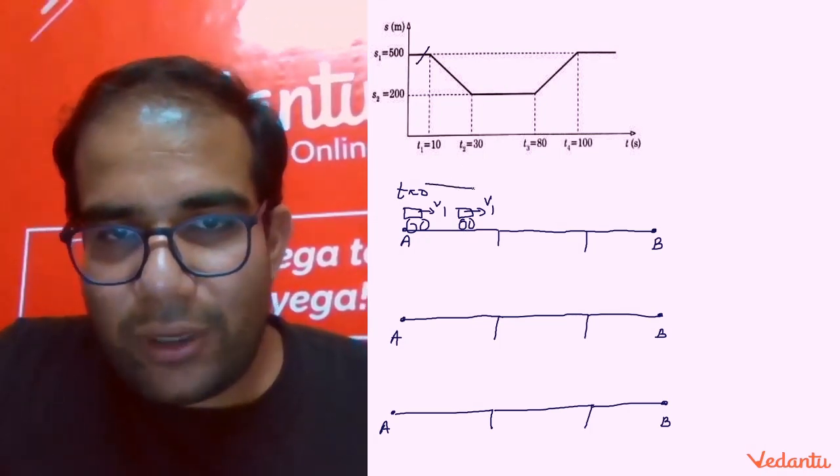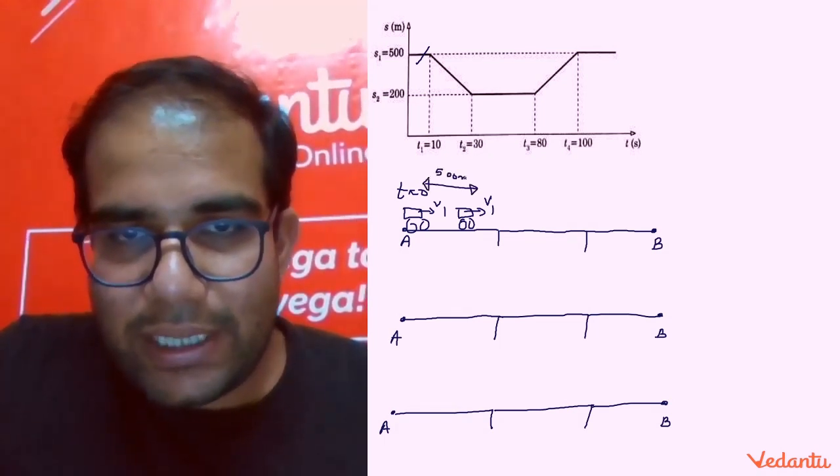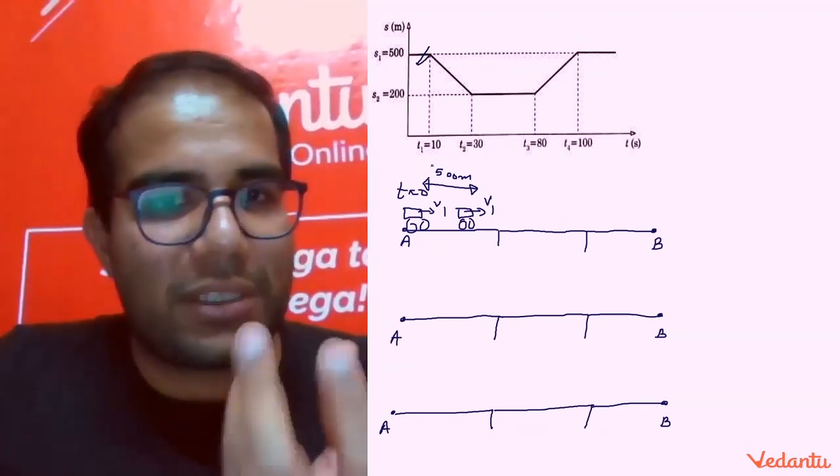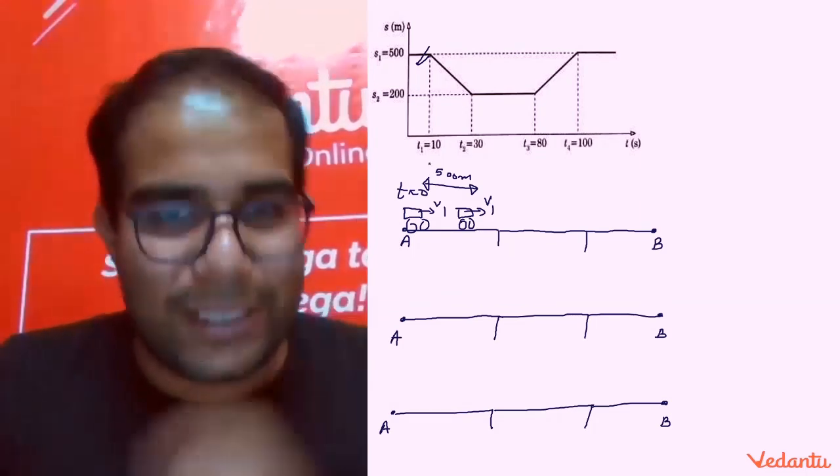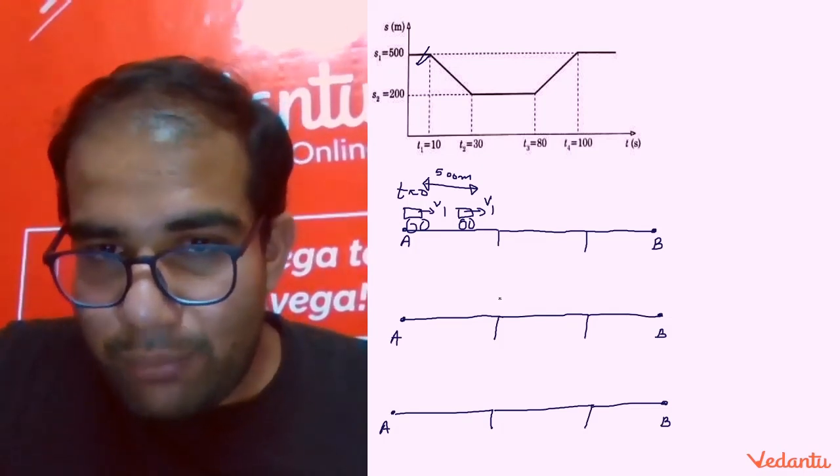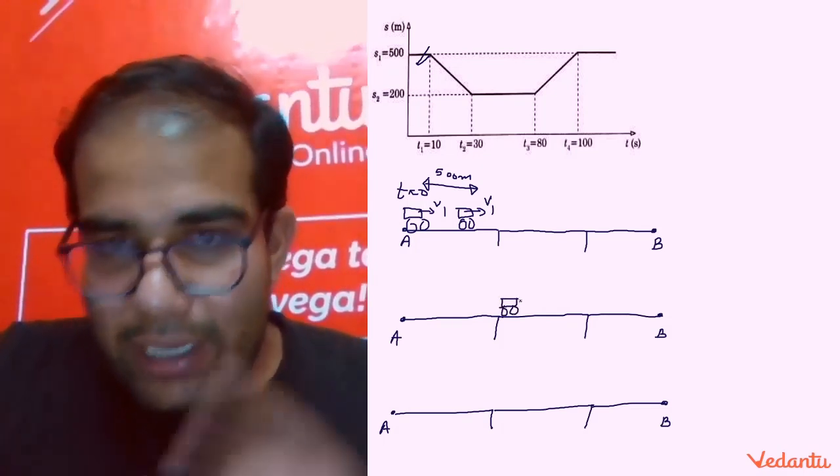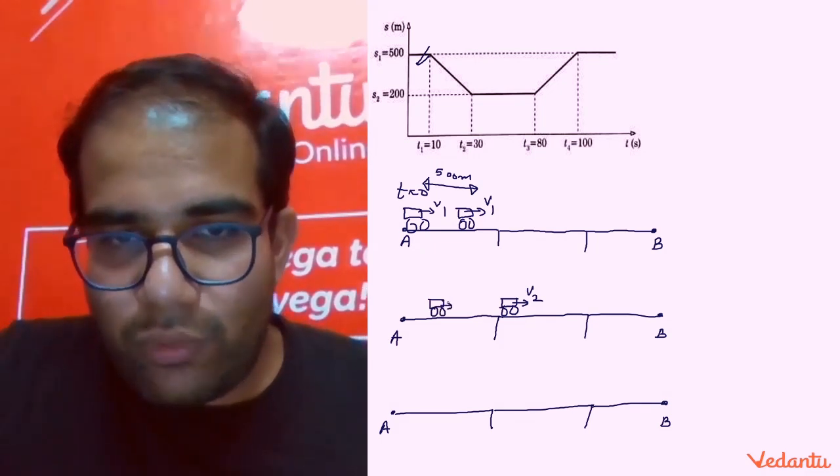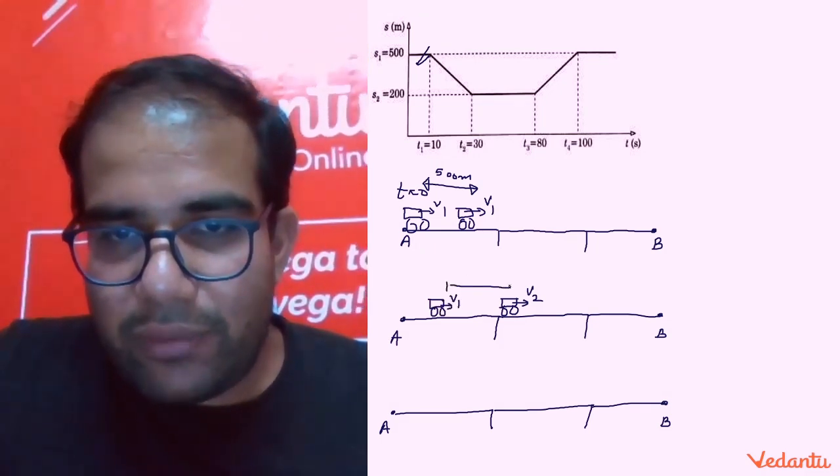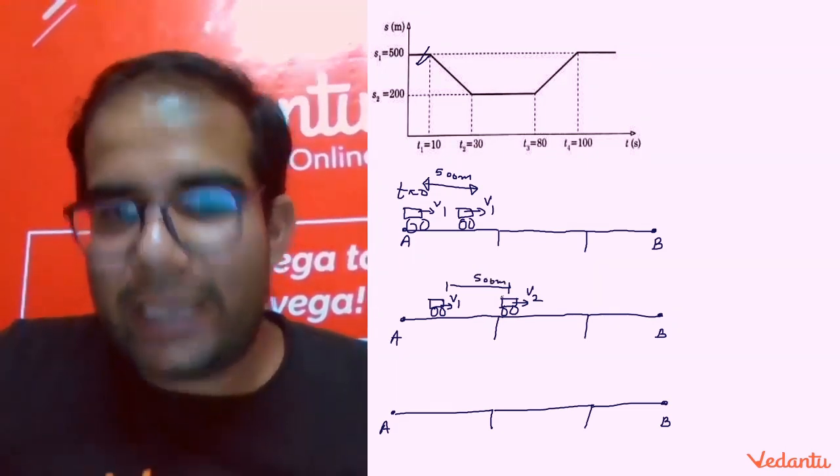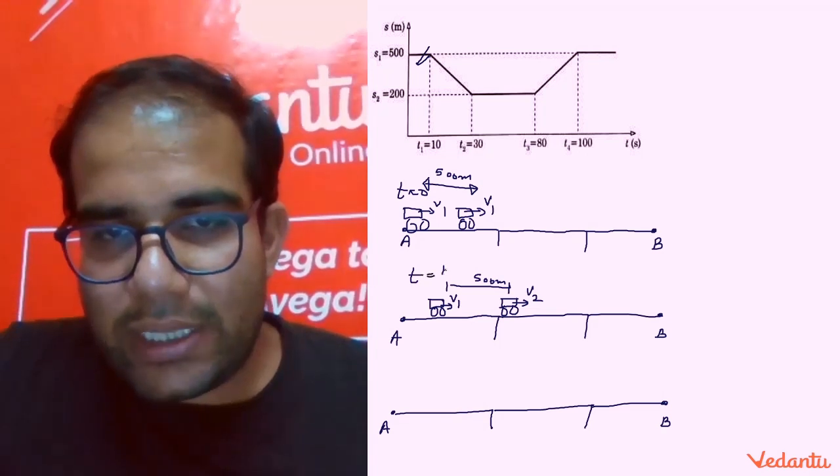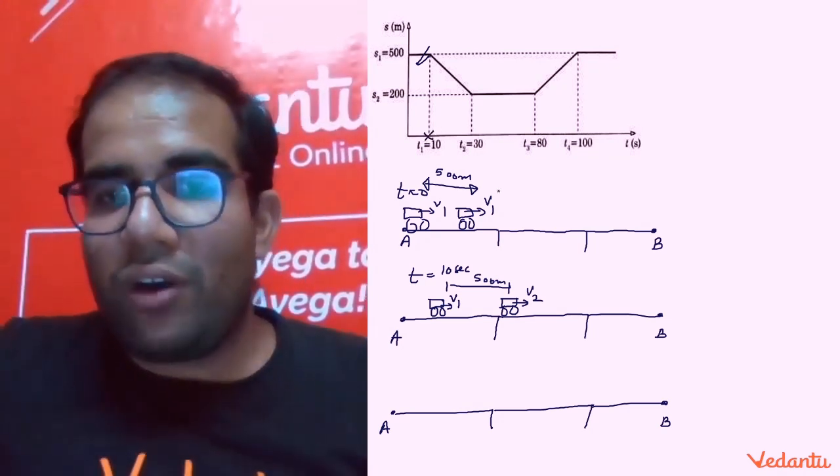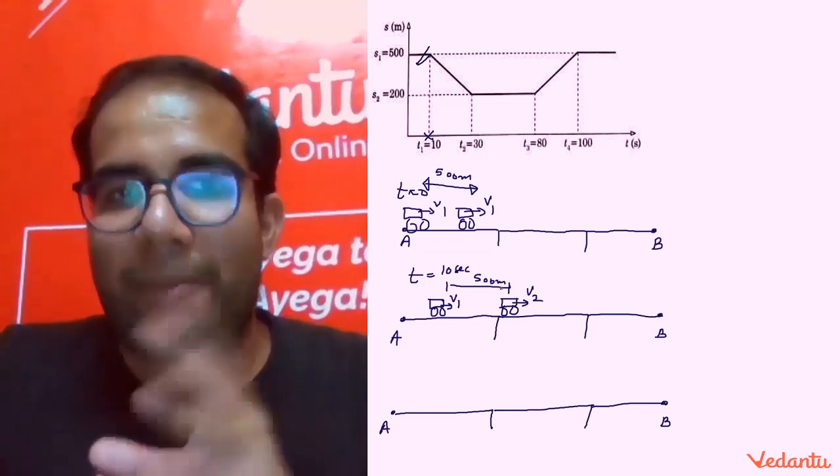So I guess now you have given your time, okay? You have attempted the question. First the distance is 500, then it decreases, it becomes 200, stagnant, and then again, guys, it increases, and it again reaches a value of 500. So I hope aapne apna jo time hai wo diya hai, and now guys, we can discuss the problem. So guys, let's discuss the solution of the problem. What is actually happening here?